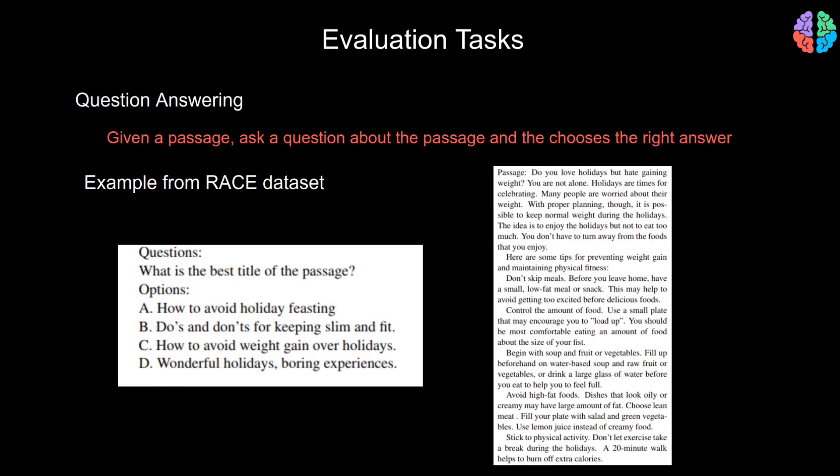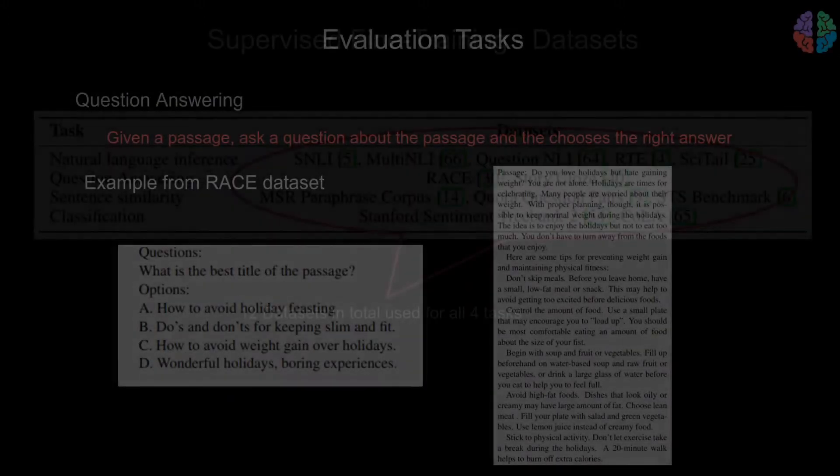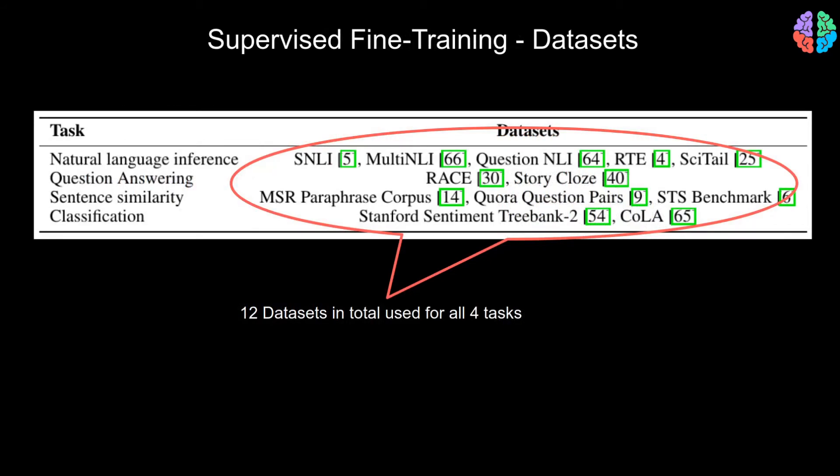The last task is question answering, which is much more challenging even for humans. It's about paraphrasing a given passage so that the model can answer a question on that passage. Here, this is an example from the RACE dataset, which shows a passage and a multiple choice question based on the passage. These are just the datasets that are used in the paper to report results for all four tasks. In total, they have used 12 datasets.